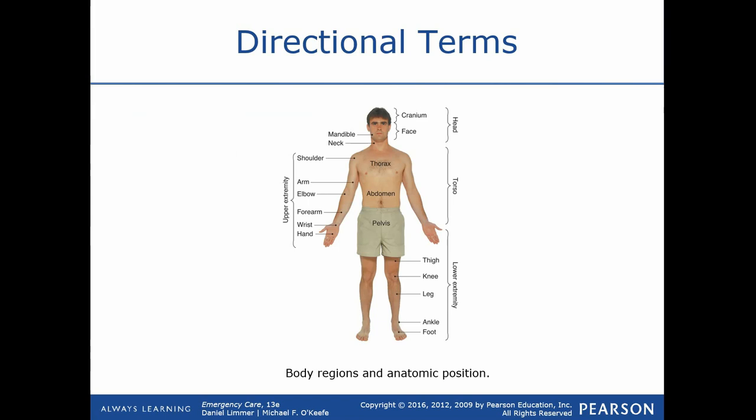The head is referred to as the cranium; the chest is the thorax or thoracic cavity; the abdomen is the abdominal cavity; the pelvis is the pelvic cavity. We also have upper and lower extremities referring to arms and legs, which can be further subdivided.